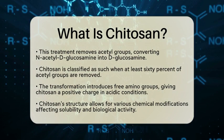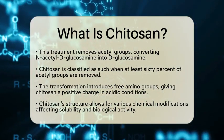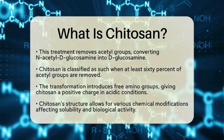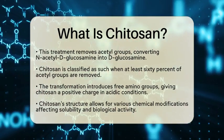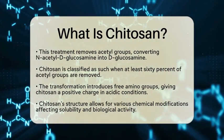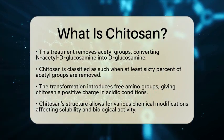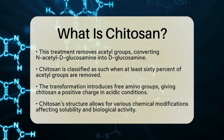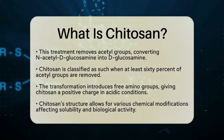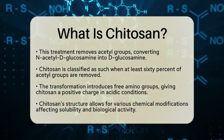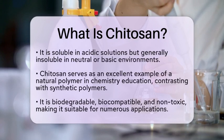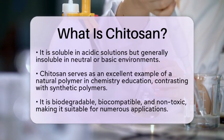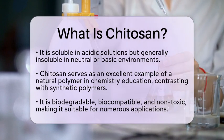Chitosan's structure, with its primary amino and hydroxyl groups, allows for various chemical modifications. These modifications can change its solubility, biodegradability, and biological activity. For instance, chitosan is soluble in acidic solutions but tends to be insoluble in neutral or basic environments. This property can limit its use in certain situations, but researchers have developed chitosan derivatives to improve solubility and functionality.